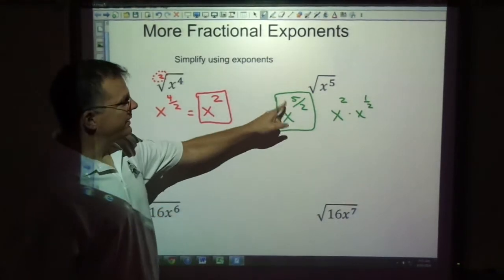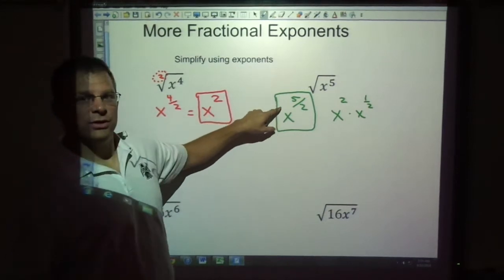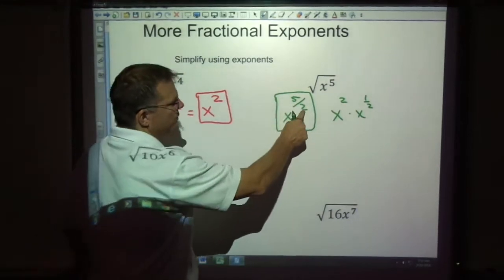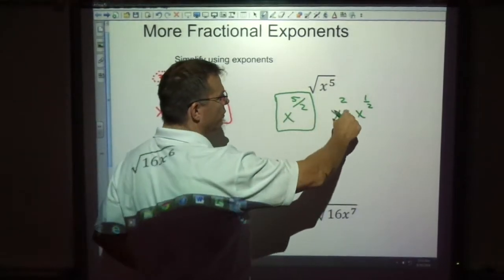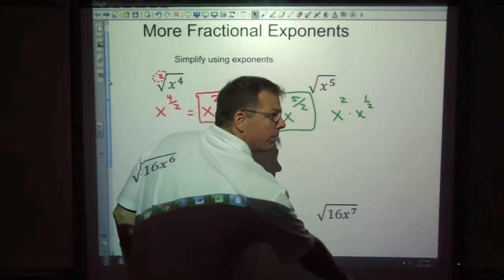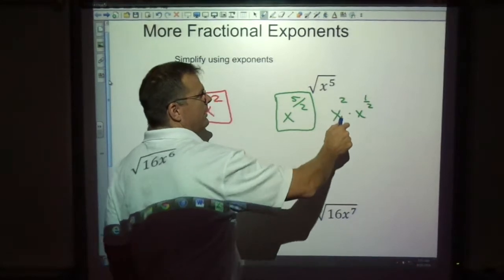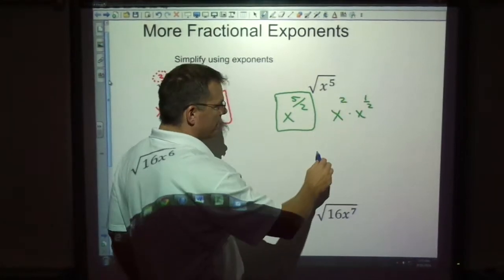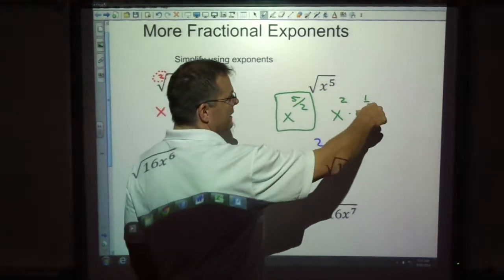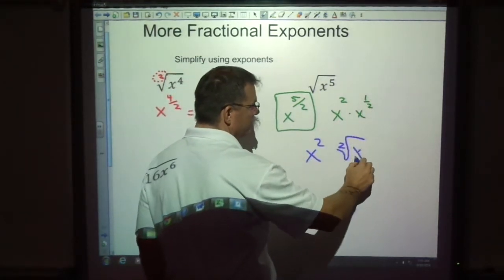Now, that said, if this was the problem and the directions were simplify using radicals, then we'd want to think about it like this. Well, we can get two goes into five two whole times with one left over. So if I was going to only put this into radical form, this part wouldn't need to be in a radical because it's just x squared. The only part that would need to be in a radical is this.